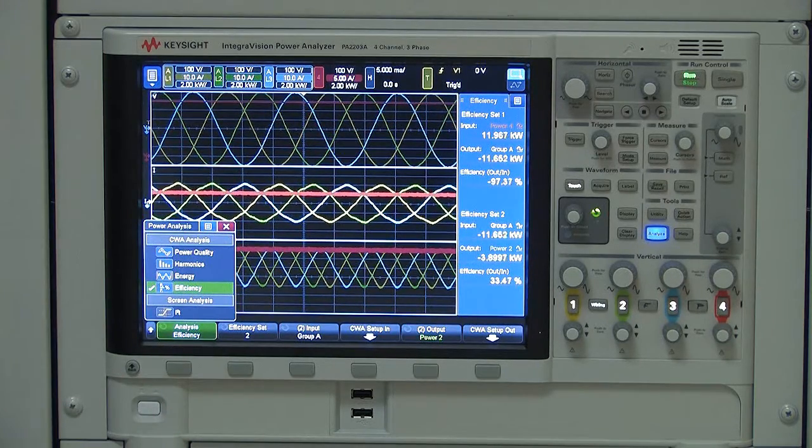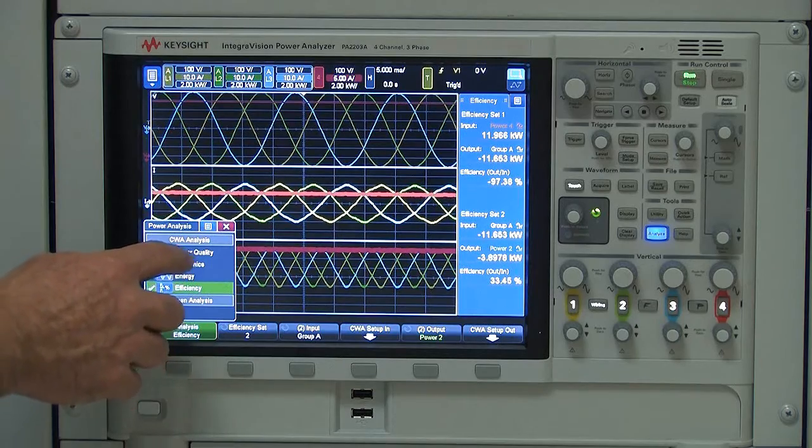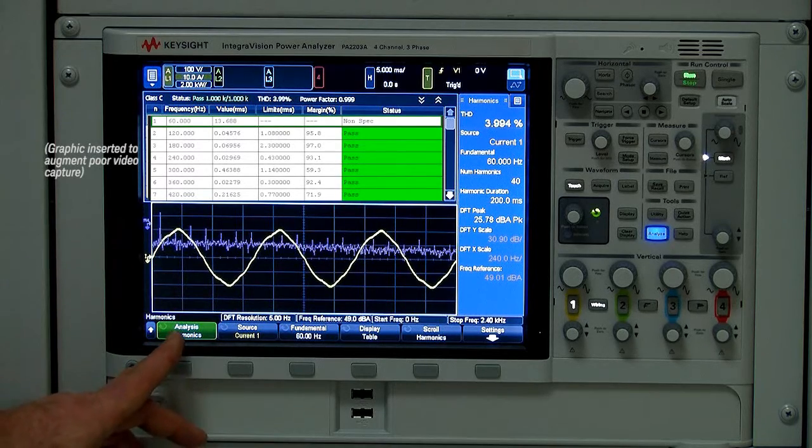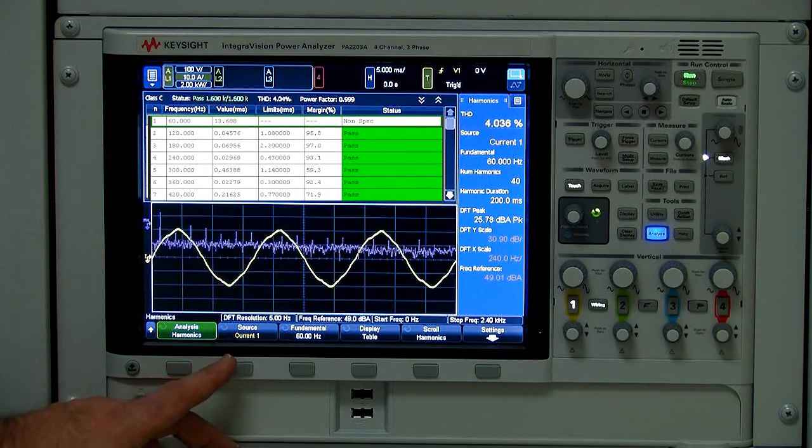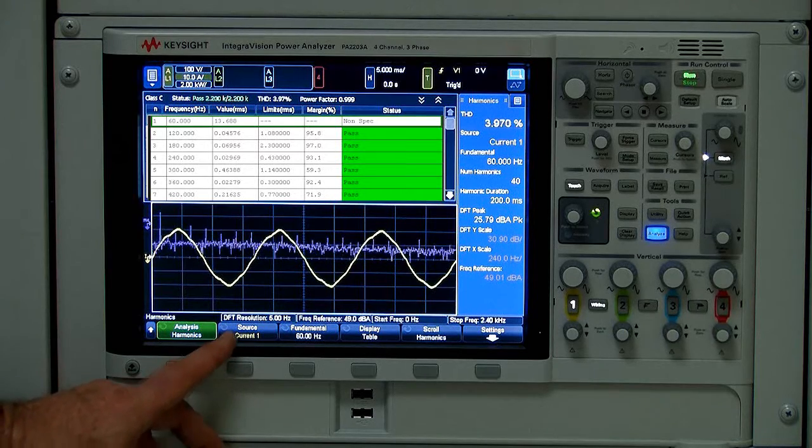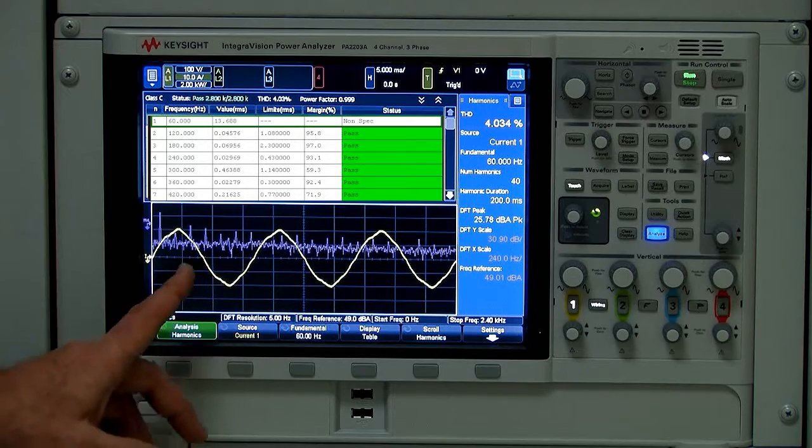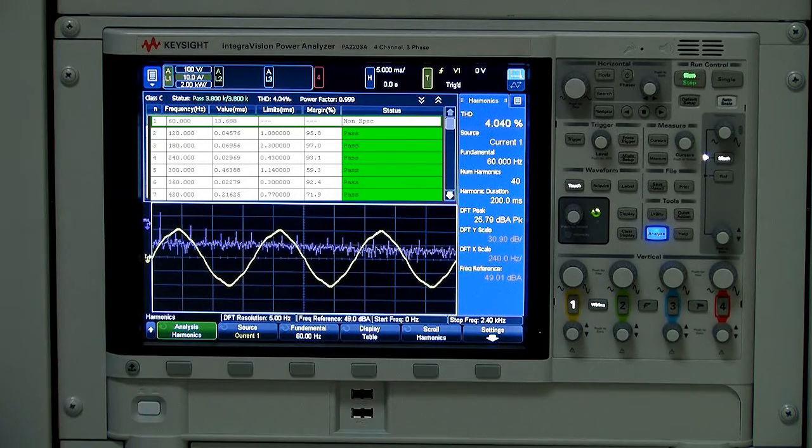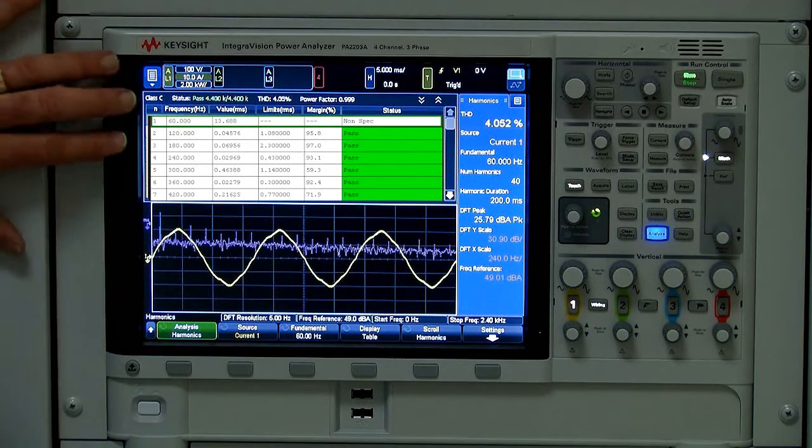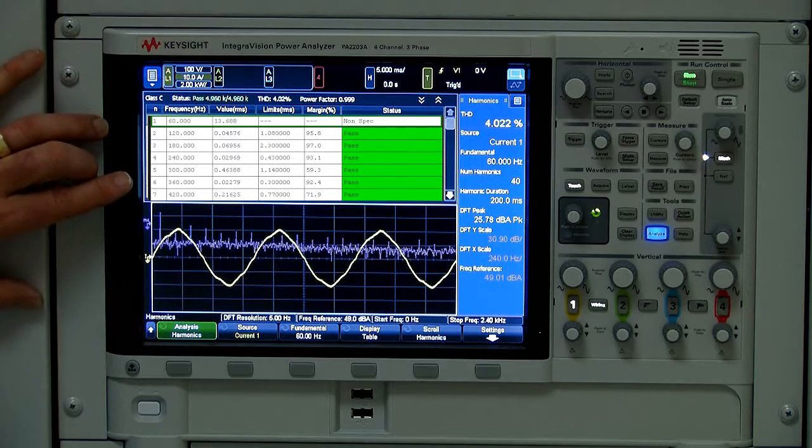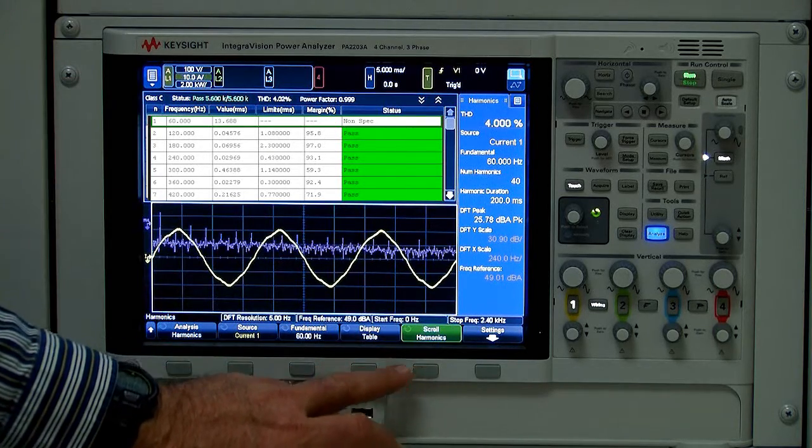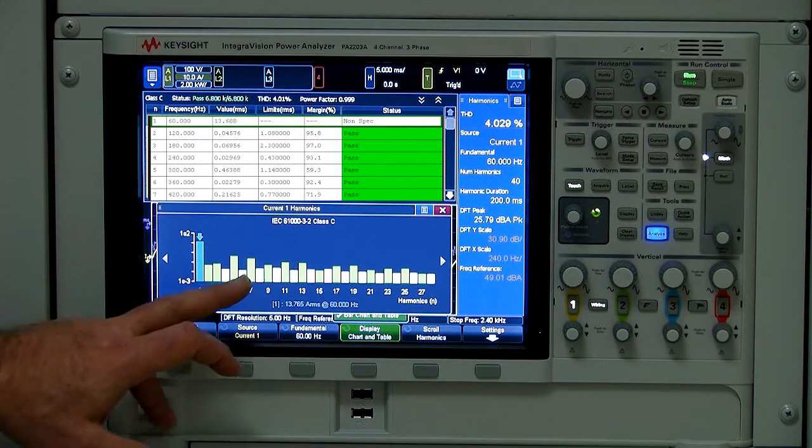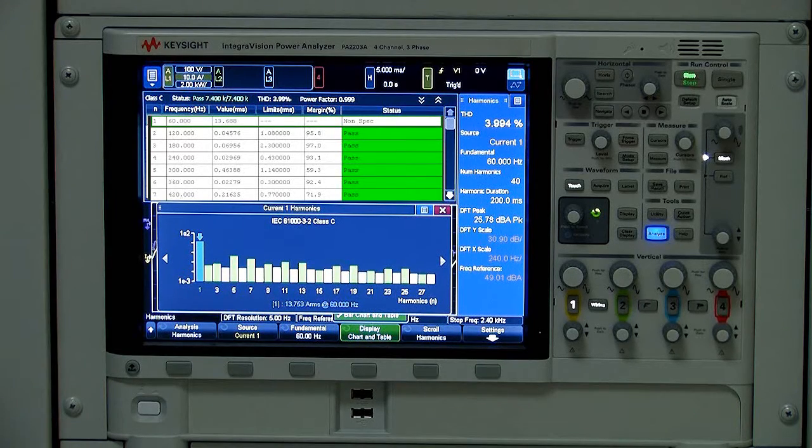Another test that you might want to look at would be to look at the harmonics of some of the signals. In this case, I'm looking at the harmonics of one of the phase currents, phase current one, which has a total harmonic distortion of about 4%. And each one of the harmonics of that are showed here. You can also display that in a table format and see the various sizes of each of the harmonics there.